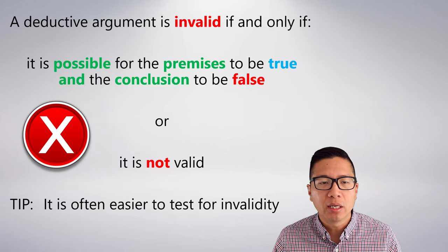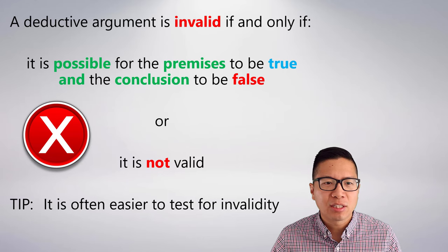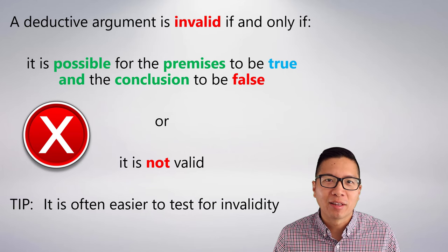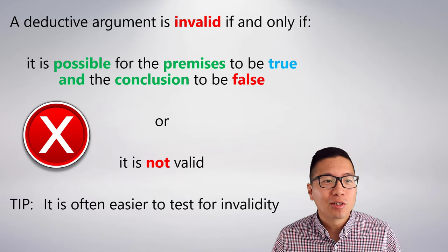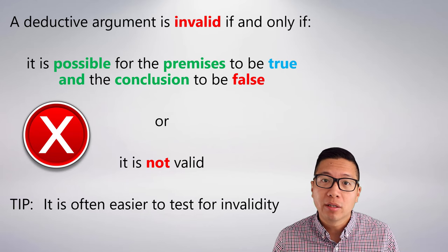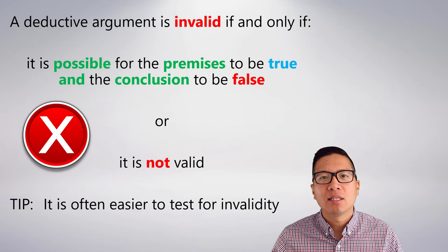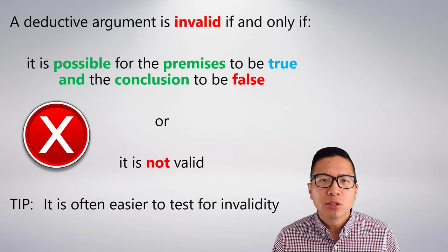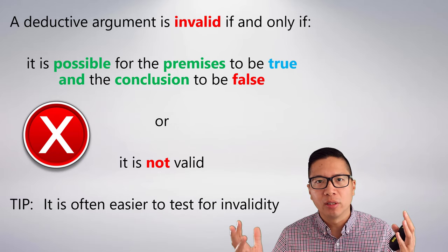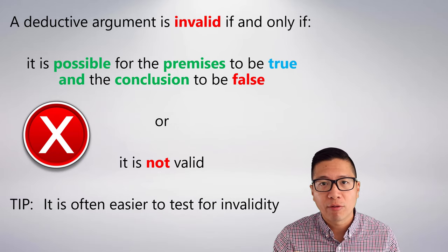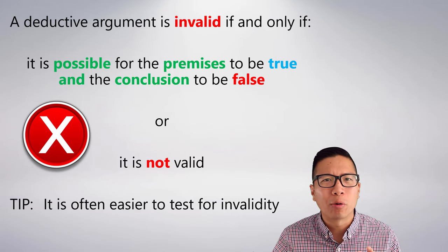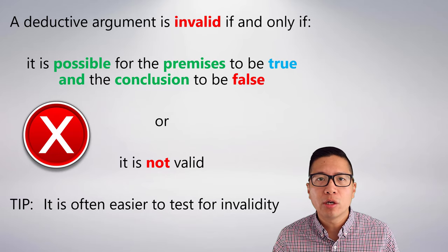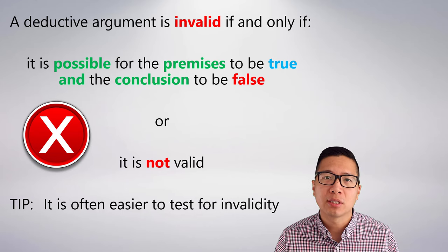Here's the definition of invalidity. A deductive argument is invalid if it's not valid — pretty straightforward. But what that really means is that it is possible for the premises to be true and the conclusion to be false at the same time. A tip: it's often easier to test for invalidity, and that's actually what we did by trying to find those counterexamples. Testing for invalidity is the exact same thing as testing for validity — so long as you know the definition of validity, you will always know how to test arguments.